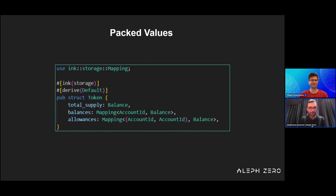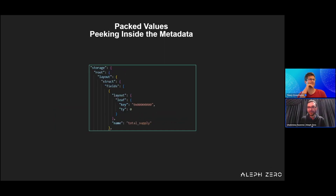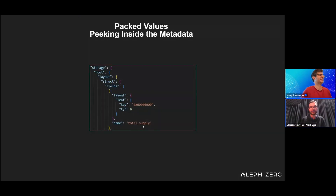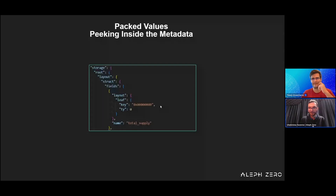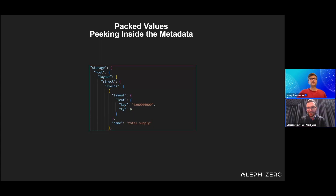It is the default behavior. Notably, if you define the behavior otherwise or the standard library does so for you, they will be stored differently. But let's peek inside our metadata. What you would see is that there is this default key — it is default for everything — which is zero. Our field 'total_supply' which has balance type is stored under this address.